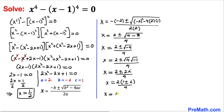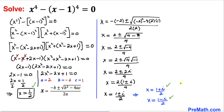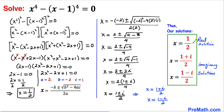Splitting the plus or minus sign, we get two solutions: x equal to (1 plus i) divided by 2, and x equal to (1 minus i) divided by 2. So altogether we have three solutions: x equals 1/2 is the real solution, and x equals (1 plus i)/2 and x equals (1 minus i)/2 are the two imaginary solutions. Thanks for watching and please don't forget to subscribe to my channel for more exciting videos.